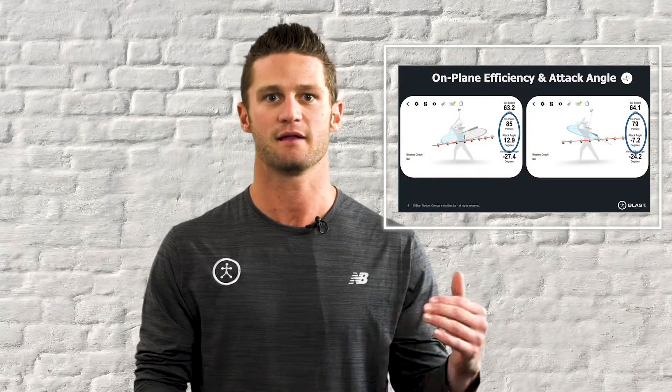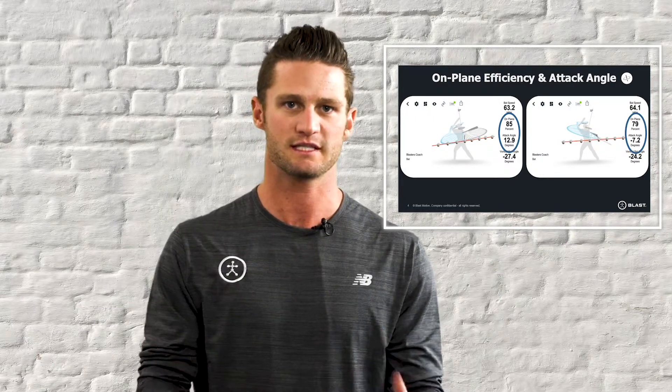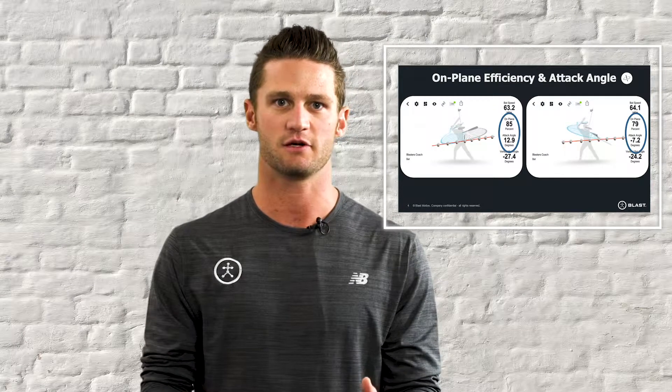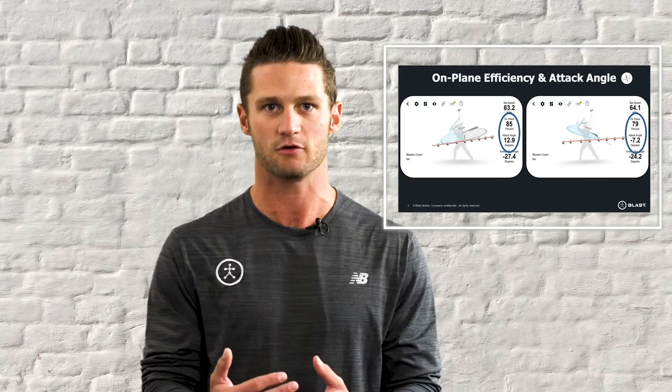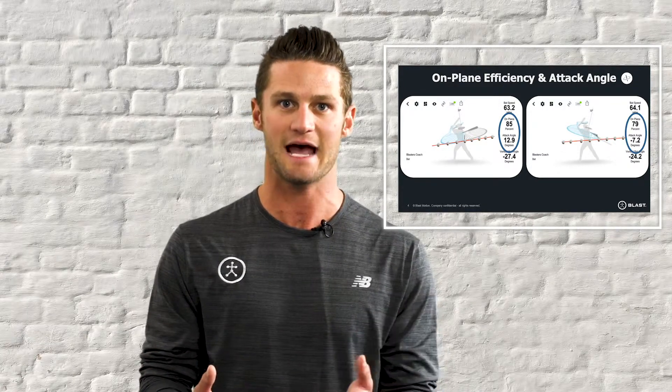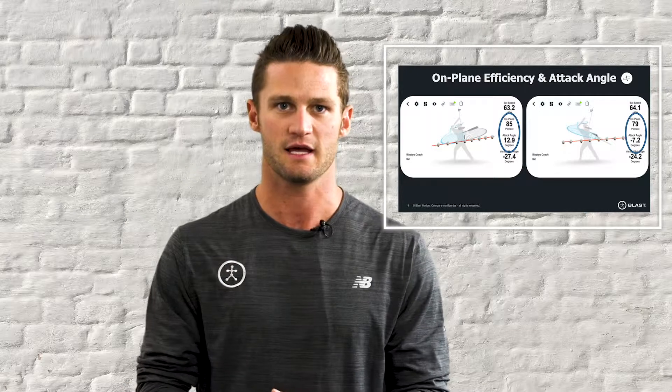The first impact metric to focus on is attack angle. Attack angle tells us whether you're swinging up, down, or level, and to what degree at the point of impact. In an ideal world, the hitter wants to match the incoming pitch to have the biggest window to hit the ball in the hitting zone. Looking at the 3D swing tracer, one hitter is matching their attack angle to the incoming pitch while the other is swinging down, creating a smaller window to hit the ball.